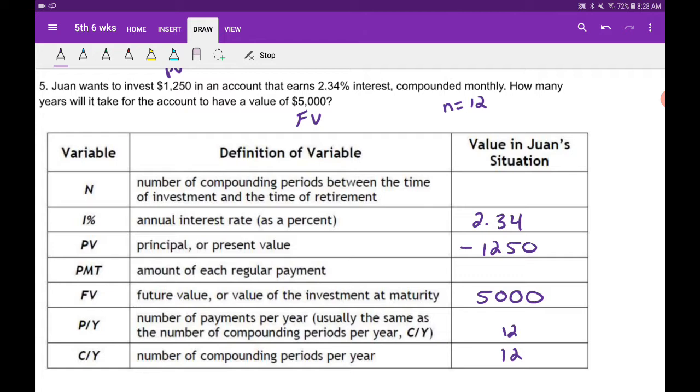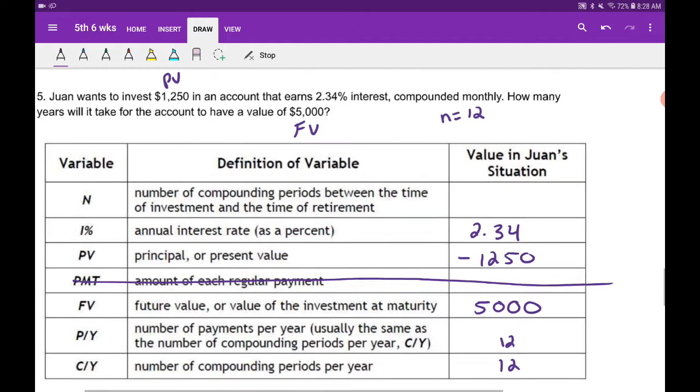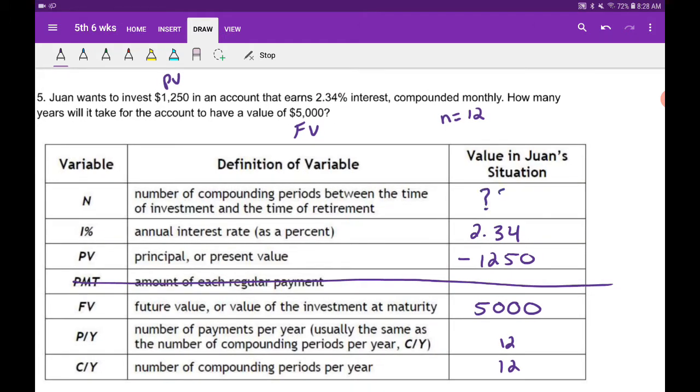Again, it's coming out of your wallet, put it in as a negative. We're going to ignore the payments for now, that's another lesson. The issue here is what we're going to look for is we're looking for N, that's what we're looking for here.